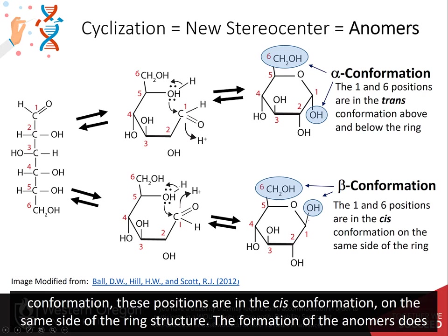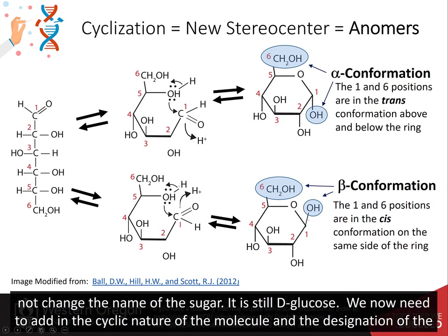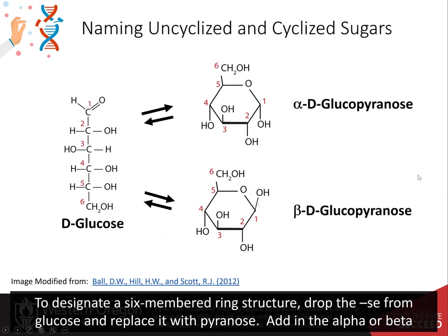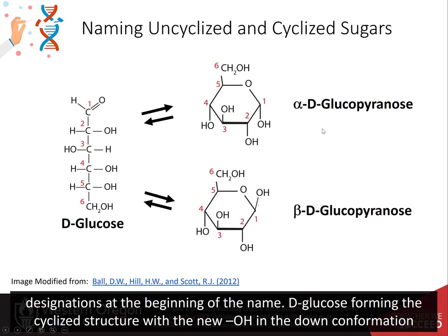The formation of the anomers does not change the name of the sugar — it is still D-glucose. We now need to add the cyclic nature of the molecule and the designation of the new anomer, alpha or beta, into the name. To designate a six-membered ring structure, drop the '-ose' from glucose and replace it with '-pyranose.'